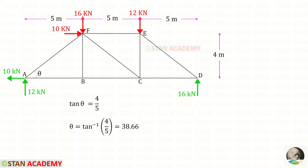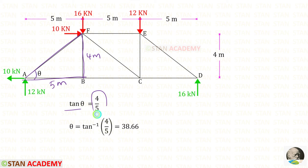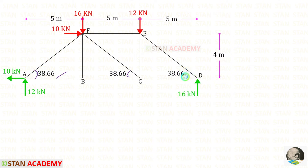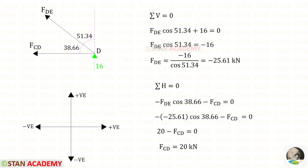Before finding member forces, we need to find the angles. Let us take this triangle. The angle theta equals opposite side divided by adjacent side. The opposite side is 4 m and the adjacent side is 5 m, so tan theta = 4/5, giving theta = 38.66°. This means the complementary angle is 90 minus 38.66 = 51.34°. I am going to use the method of joints to find the member forces, using only cos theta.